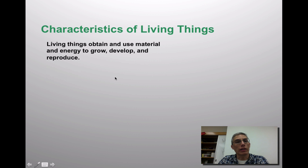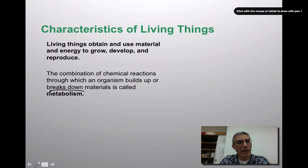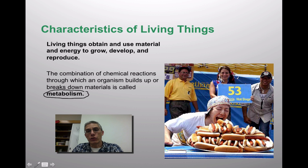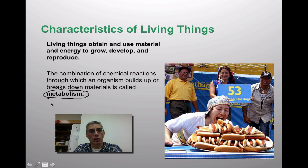Another characteristic is that living things obtain and use materials and energy to grow, develop, and reproduce. This is a combination of chemical reactions through which an organism builds up or breaks down materials — and we use the special term metabolism for that. You need to take in nutrients to be able to grow, develop, and reproduce. The energy you receive comes from that food, and there are special processes within your cells, which we'll discuss later in the course, that allow your body to pull that energy out and use it for various functions. All of that together is called metabolism.